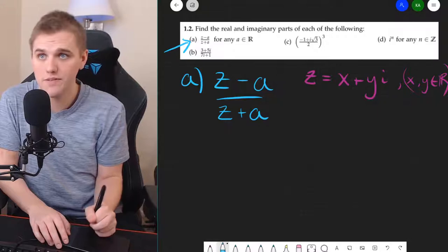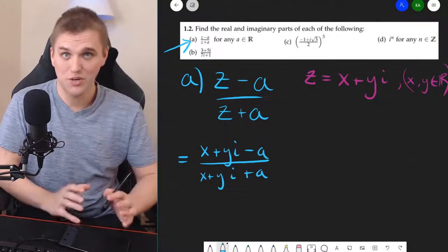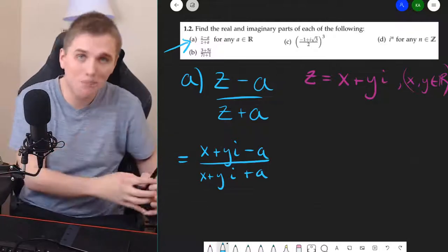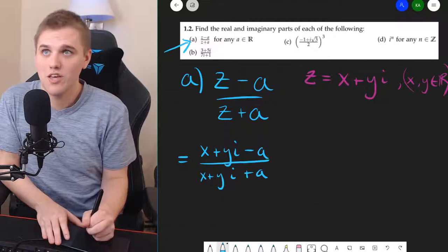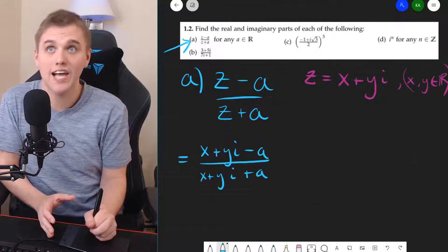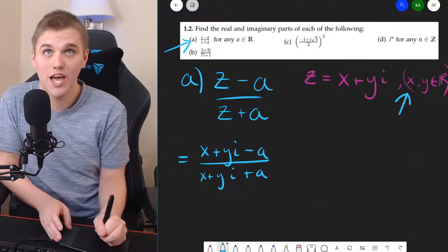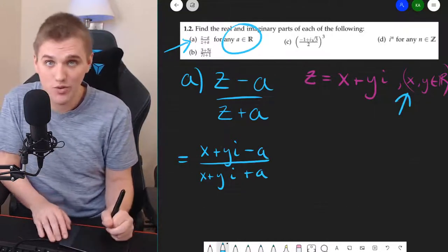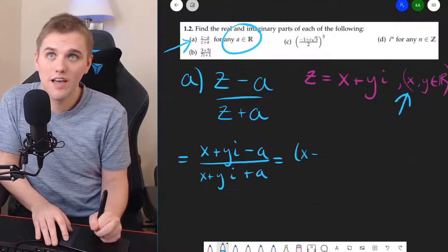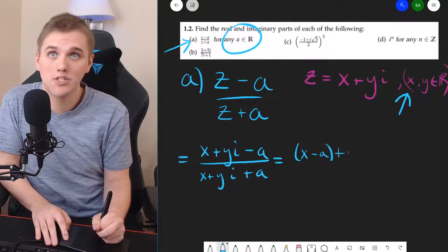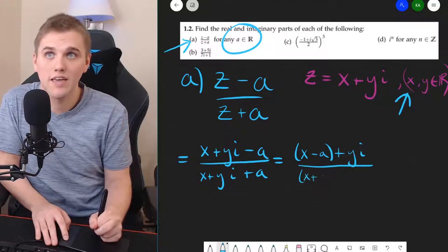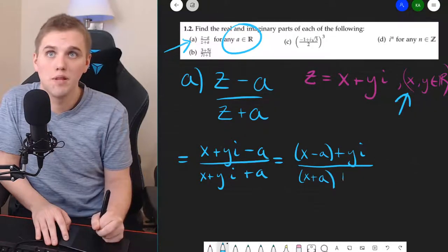So let's rewrite this fraction. Now, the next thing I'm going to do is I'm going to combine my real numbers and my complex terms together. And so in the numerator, you might notice that X minus A is a real number because both X and A are real numbers. So I can rewrite this as X minus A plus Y times I divided by X plus A plus YI.